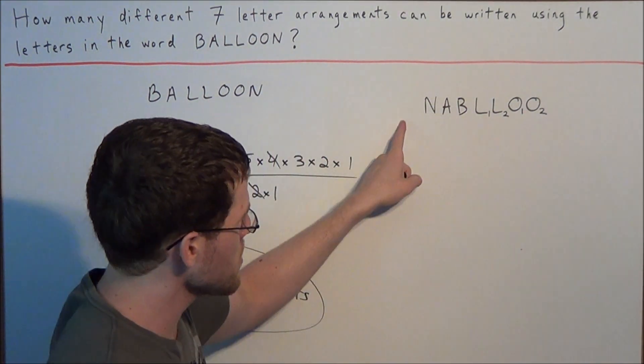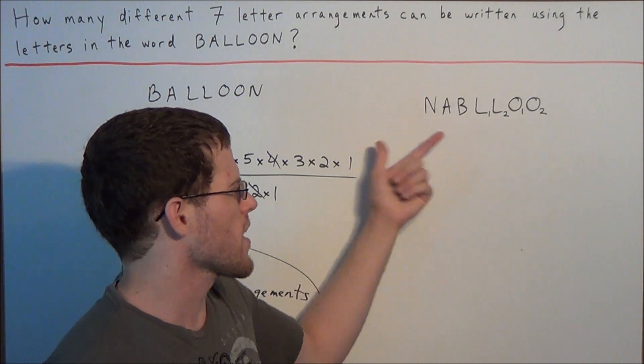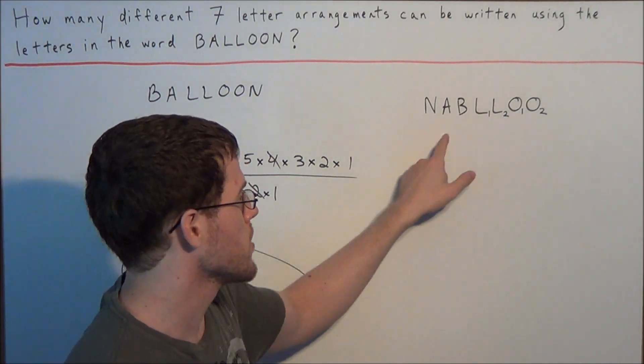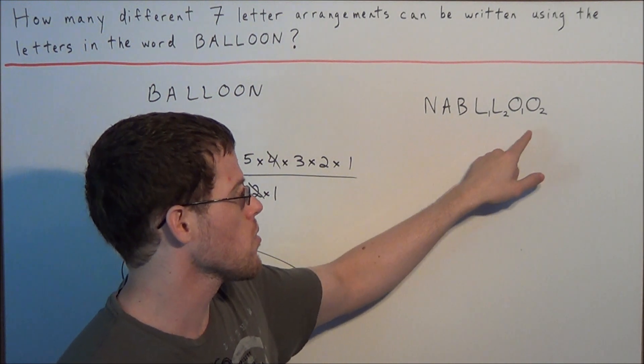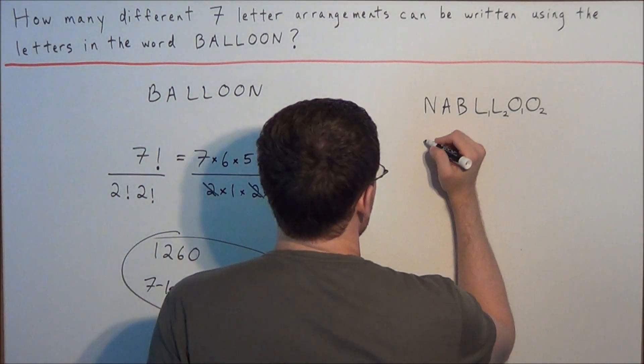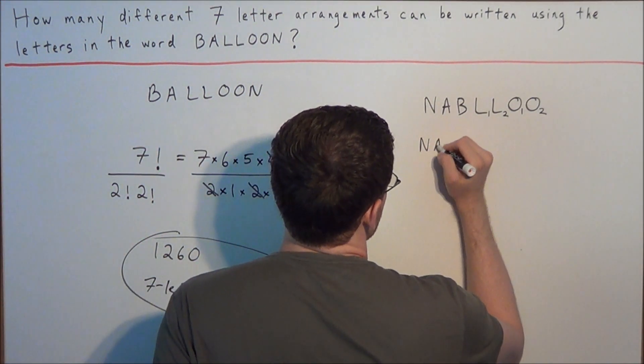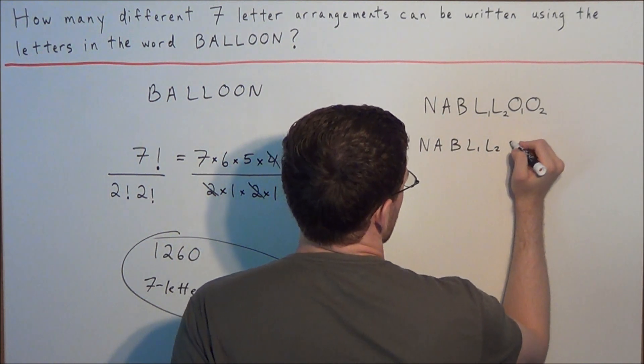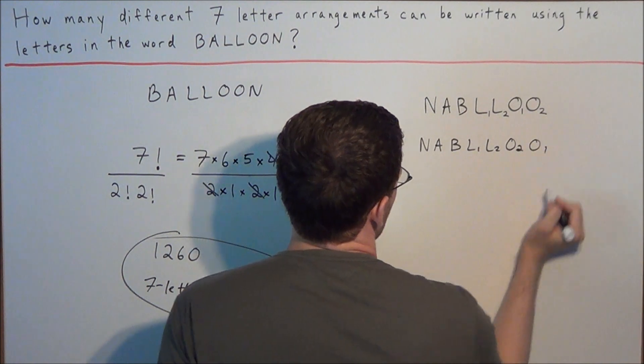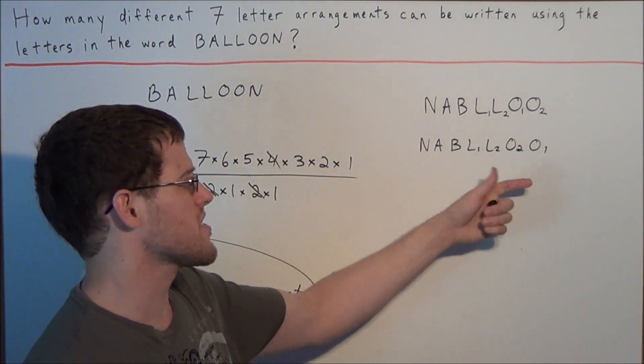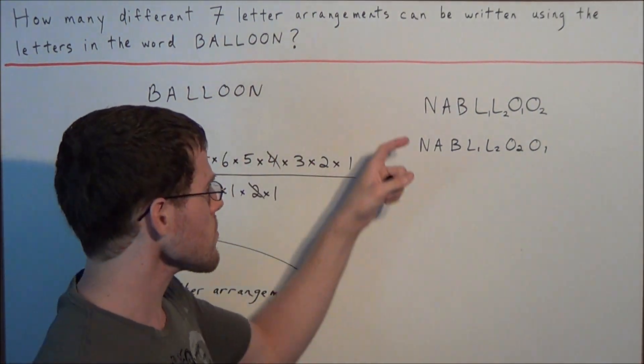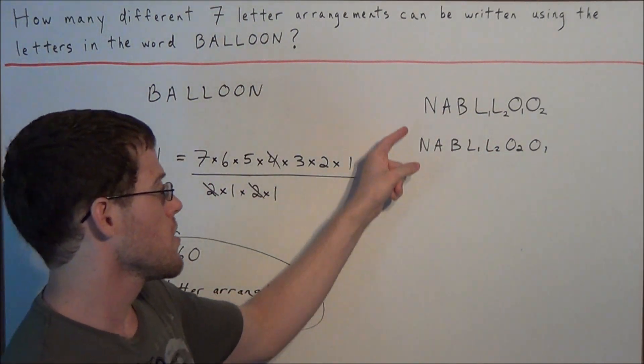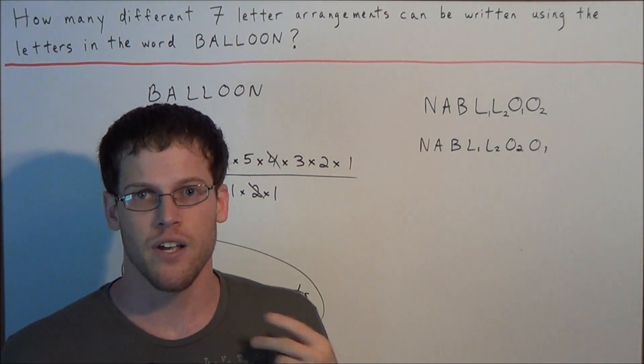So now this would be one arrangement of the word N-A-B-L-L-O-O. If the letters were different, it would be N-A-B-L-1-L-2-O-1-O-2. But now we would be able to rewrite this another way. We would be able to say N-A-B-L-1-L-2 and then we could say O-2-O-1. If we hide the numbers, this is the exact same arrangement of letters, but using seven factorial, this would count these as two different arrangements.